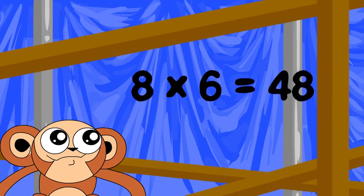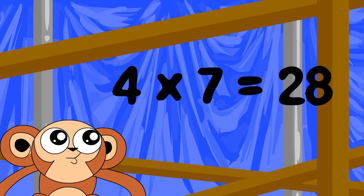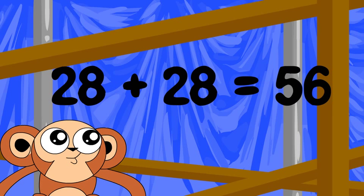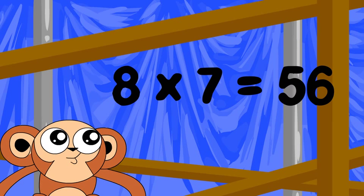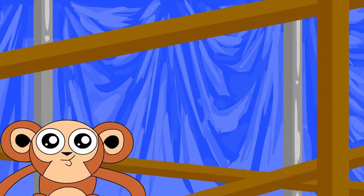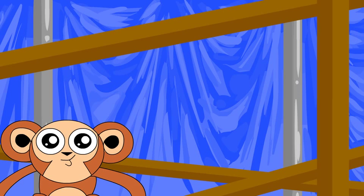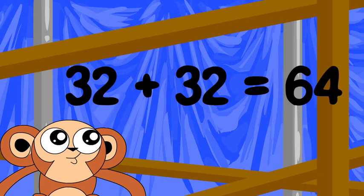4 times 7 is 28. Double 28 is 56. So 8 times 7 is 56. 4 times 8 is 32. Double 32 is 64. So 8 times 8 is 64.